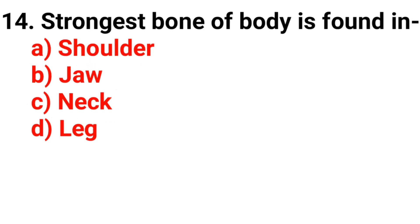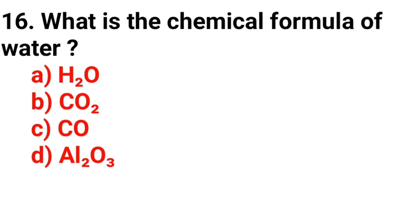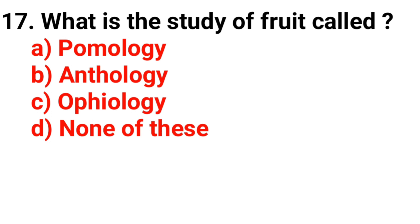Question 14. Strongest bone of human body is found in? Answer, option B, Jaw. Question 15. Which of the following is used in pencils? Answer, option B, Graphite. Question 16. What is the chemical formula of water? Answer, option A, H2O. Question 17. What is the study of fruit called? Answer, option A, Pomology.